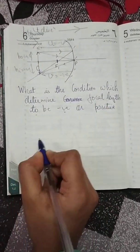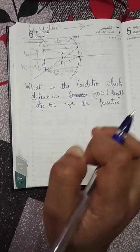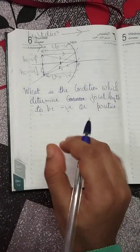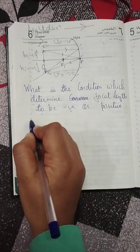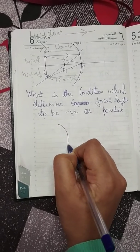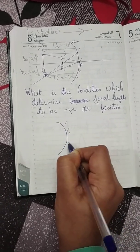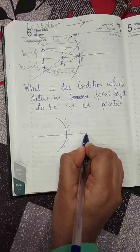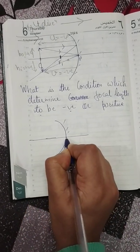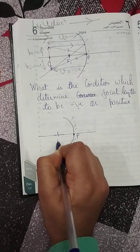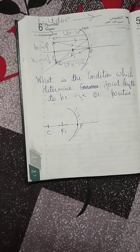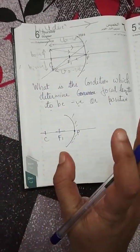Please watch the whole video, and if you have any problem with any question just comment or send a message to me, I'll try to solve it. So first, let's take the case of the concave mirror. This is my concave mirror. This is my pole, this is my focus F, and this is my center of curvature.